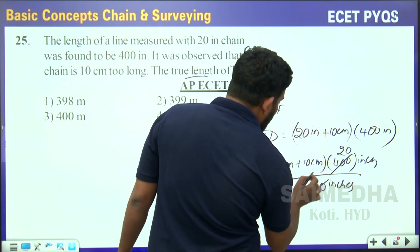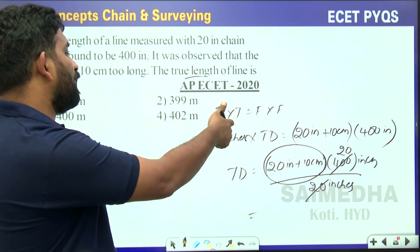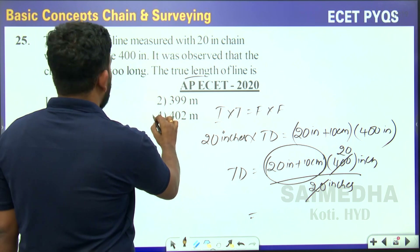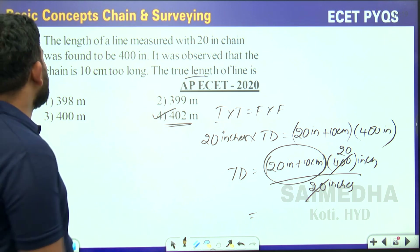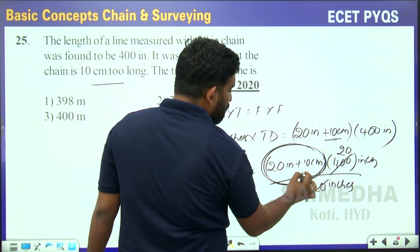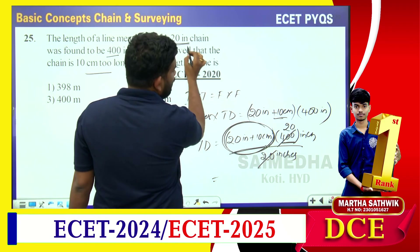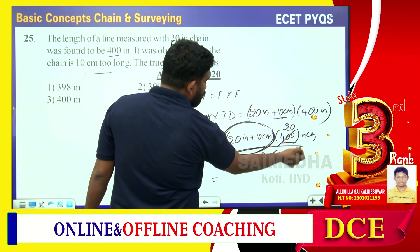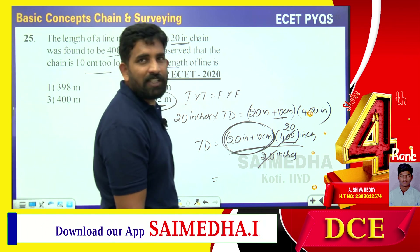We need to convert and find the answer. 20 × 20 gives 400, plus the additional 10 centimeters contribution, putting the answer above 400 meters. The only option above 400 is approximately 400.1 meters. Because the chain is too long, I added the error: (20m + 0.10m) × 400 ÷ 20m, which gives a value just above 400 meters. That is the correct answer.